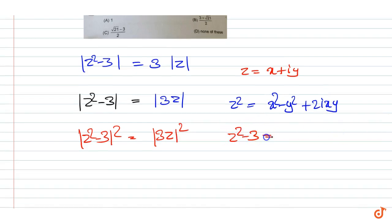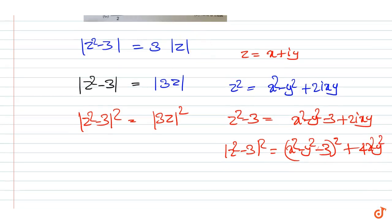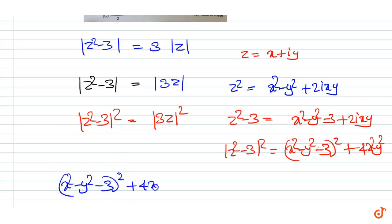z² - 3 equals (x² - y² - 3) + 2ixy. So |z² - 3|² = (x² - y² - 3)² + 4x²y². Therefore this equation gives (x² - y² - 3)² + 4x²y² = 9(x² + y²).